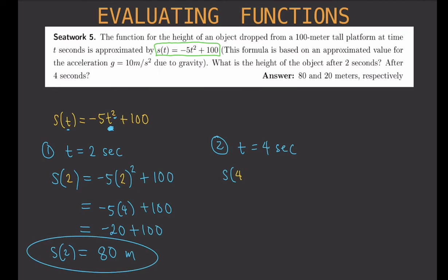s of 4 equals minus 5 times 4 squared plus 100. And that gives us minus 5. 4 squared is 16 plus 100. So that means minus 5 times 16 is minus 80 plus 100. And that gives us positive 20. So that would be s of 4.